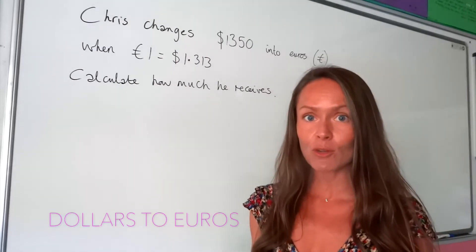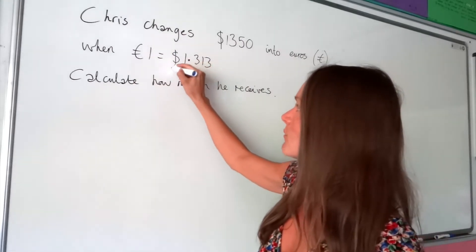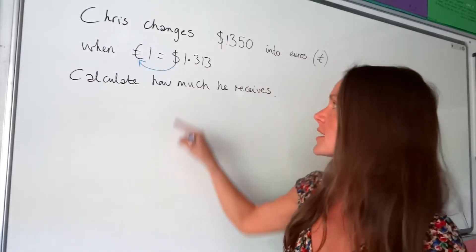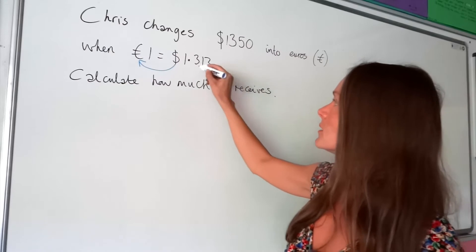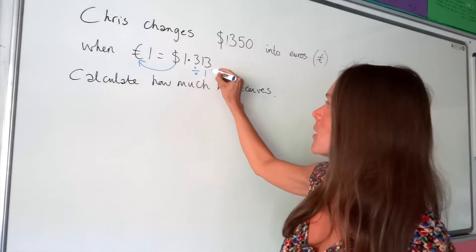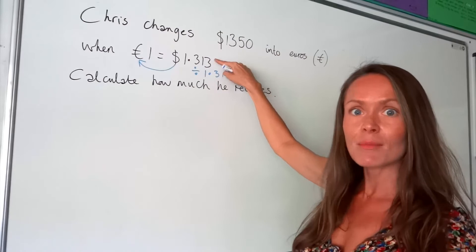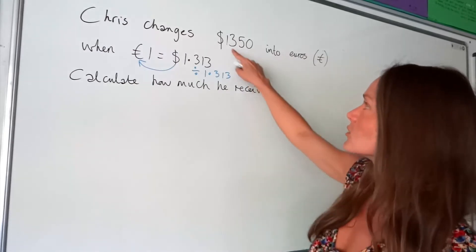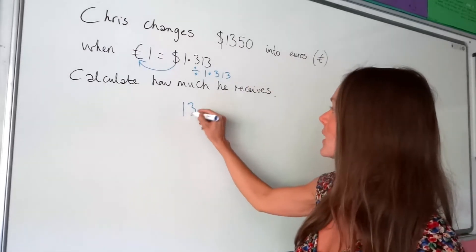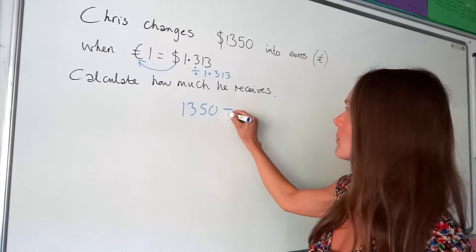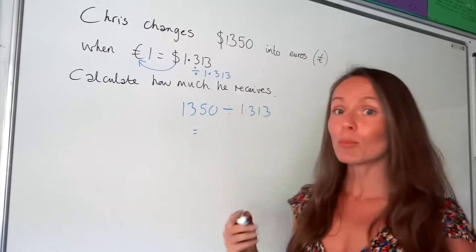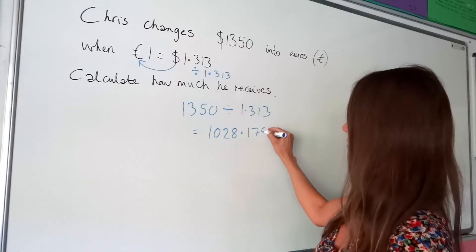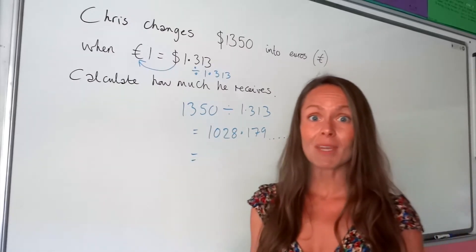In this one we're changing dollars into euros. Look at the exchange rate — we're traveling this way, dollars into euros — and we need to decide whether we're multiplying or dividing by this number. In this one it's divide, because whenever you divide a number by itself the answer is always one. So I need to do exactly the same thing with the dollars that Chris wants to change: divide those dollars by that same number, 1.313.